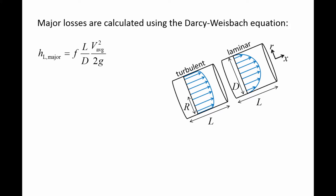In a previous video, we derived an expression for the head loss in a straight pipe of length L and diameter D, which we are now calling the major losses. This expression is called the Darcy-Weisbach equation and states that the major losses are equal to the friction factor f times L over D times V average squared over 2g.